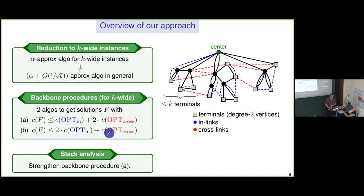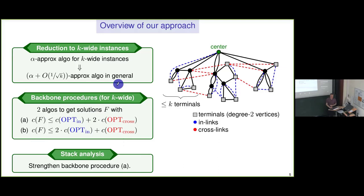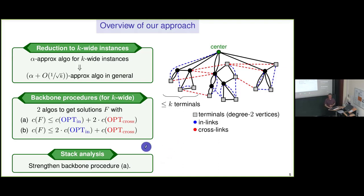If you look at these two procedures, you already have a 1.5 approximation: just take the better of the two. Mix the two inequalities half-and-half, and you get a solution whose cost is no more than 1.5 times the total cost of OPT. This gives 1.5 for K-wide, and because of the reduction on top, you get a 1.5-plus-epsilon approximation. But we actually get below even 1.4, due to an improvement of Procedure A using a procedure already used in TAP but with a much better analysis.